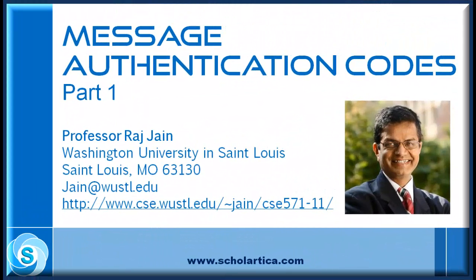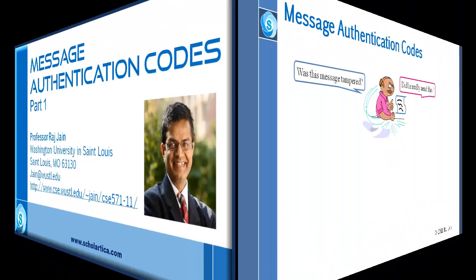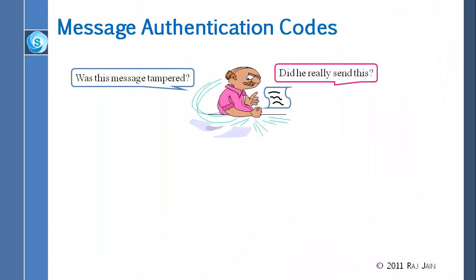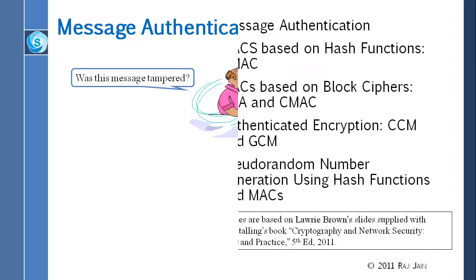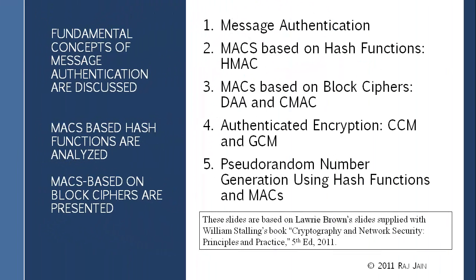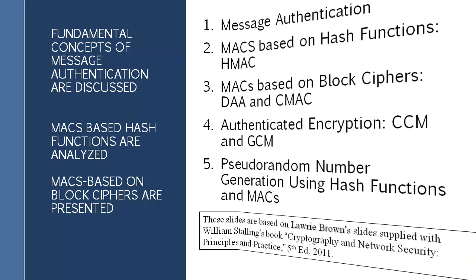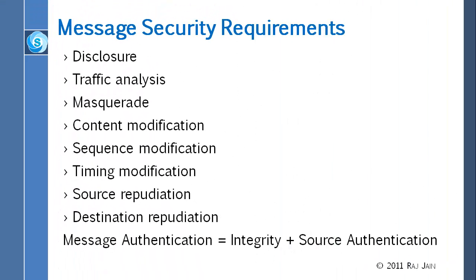We finished hashes and now we are into the next step, which is how to use those hashes for message authentication. In this part we will talk about the common methods: first, what is message authentication, and then three methods — HMAC, CMAC, and GCM. We also finish with pseudorandom number generation using hash functions and MACs.